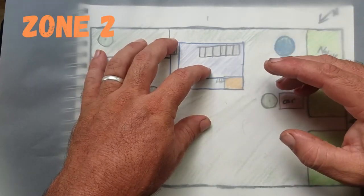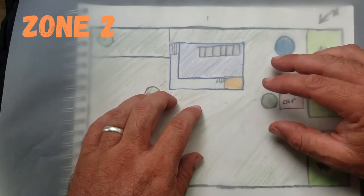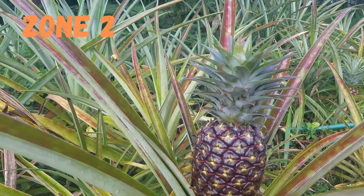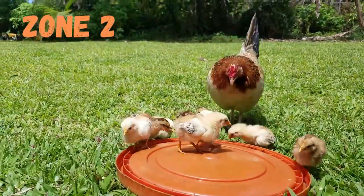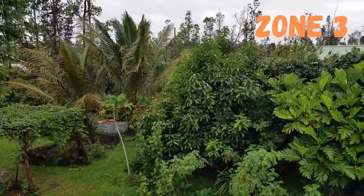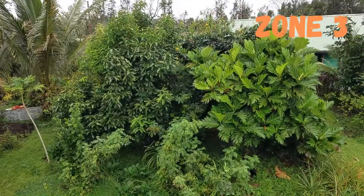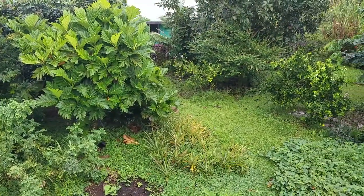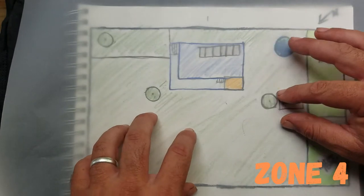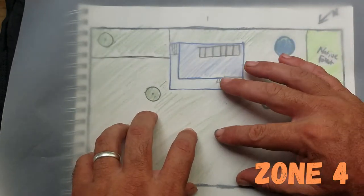Then zone two gets a little bit less attention. Perhaps it's an area where you have some small fruit trees or small animals that get a regular visit from you. And then zone three will be more of a food forest that's located a little further away. Zone four would be perhaps a managed woodland. We're getting a little more wild.